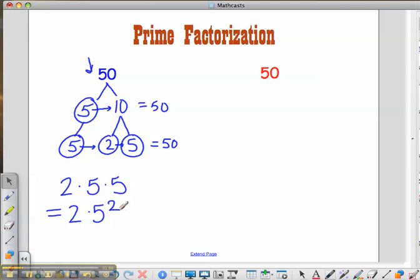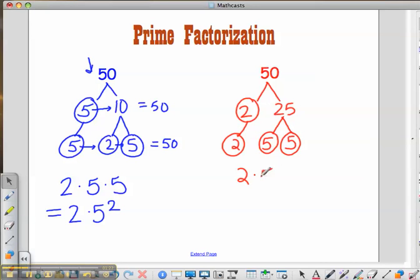Now, it doesn't matter which factors you use. I could have used 2 times 25 is 50, and then written 25 as a factor of 5 times 5. And I still get 2 times 5 times 5.